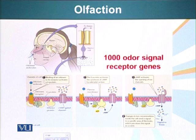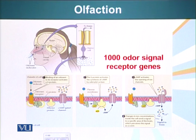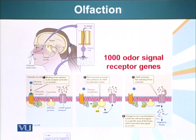Now let's discuss how we smell — olfaction. Smell is one of the first senses we developed and is very important evolutionarily. It plays a key role in mate selection in most animals, including humans. Experiments demonstrate that people tend to prefer partners with different MHC molecules, and this is mediated through olfaction.